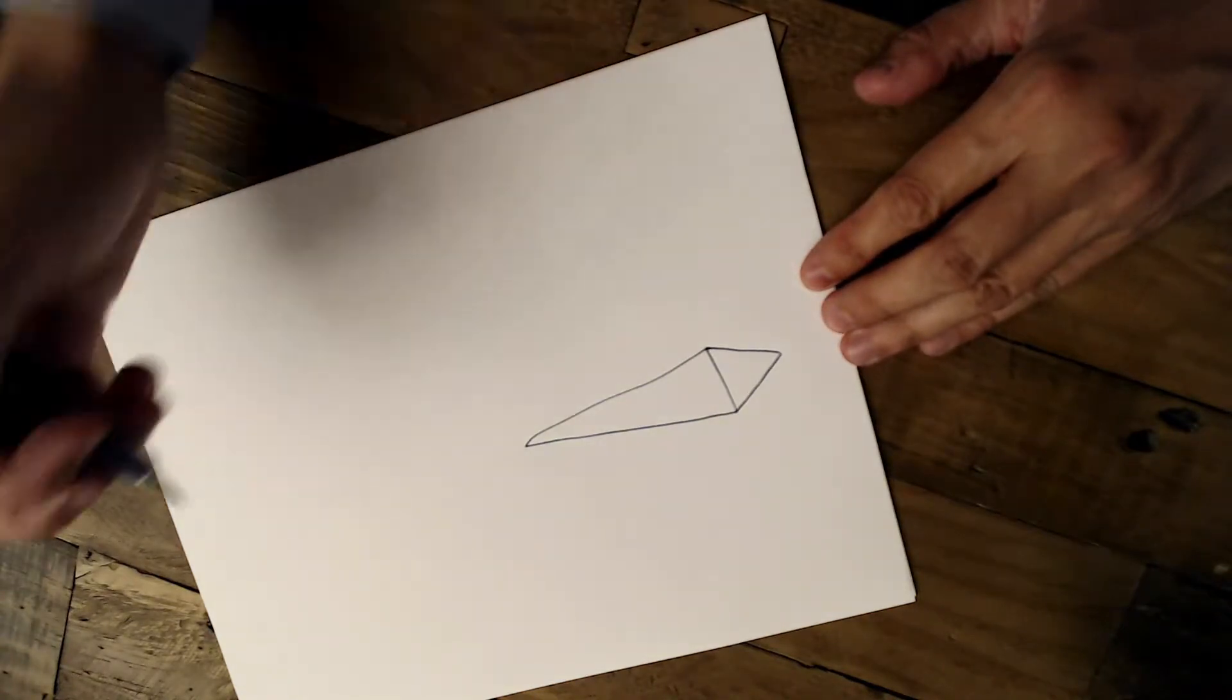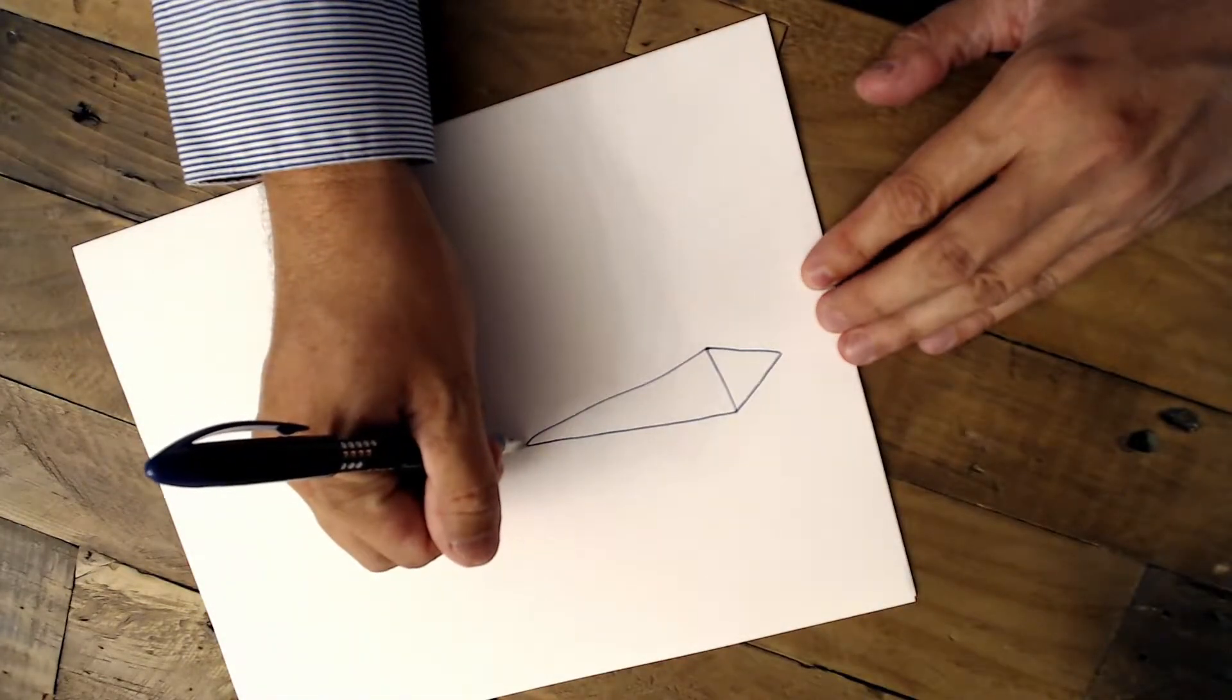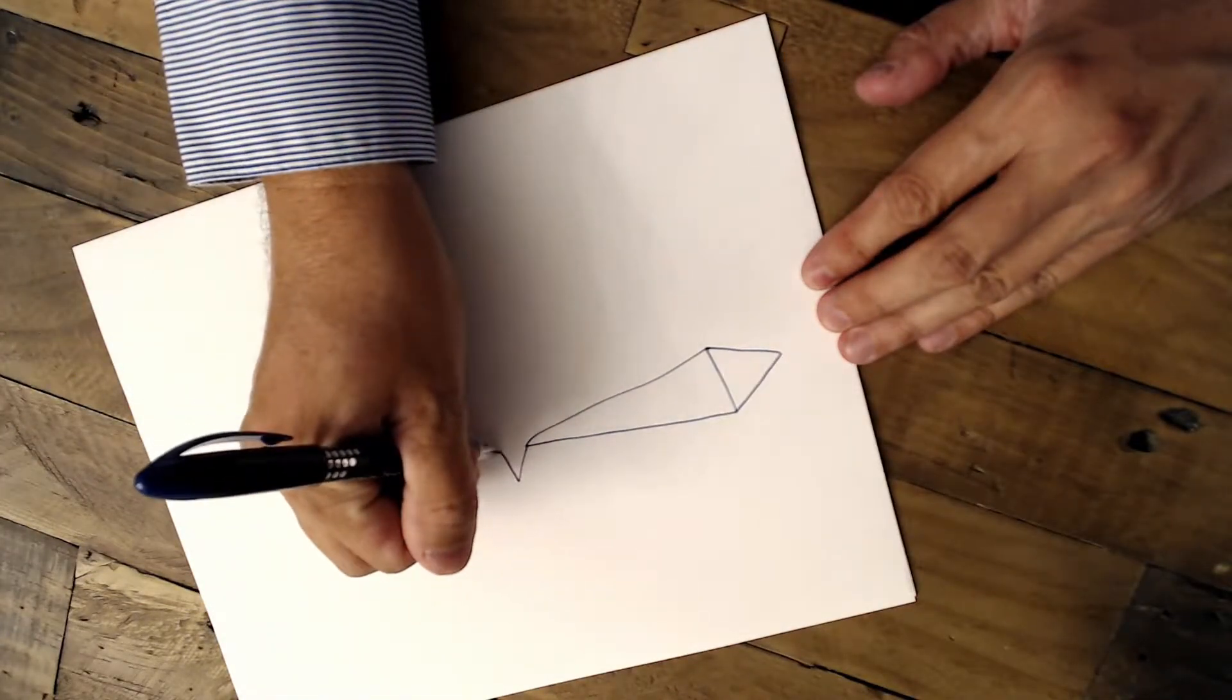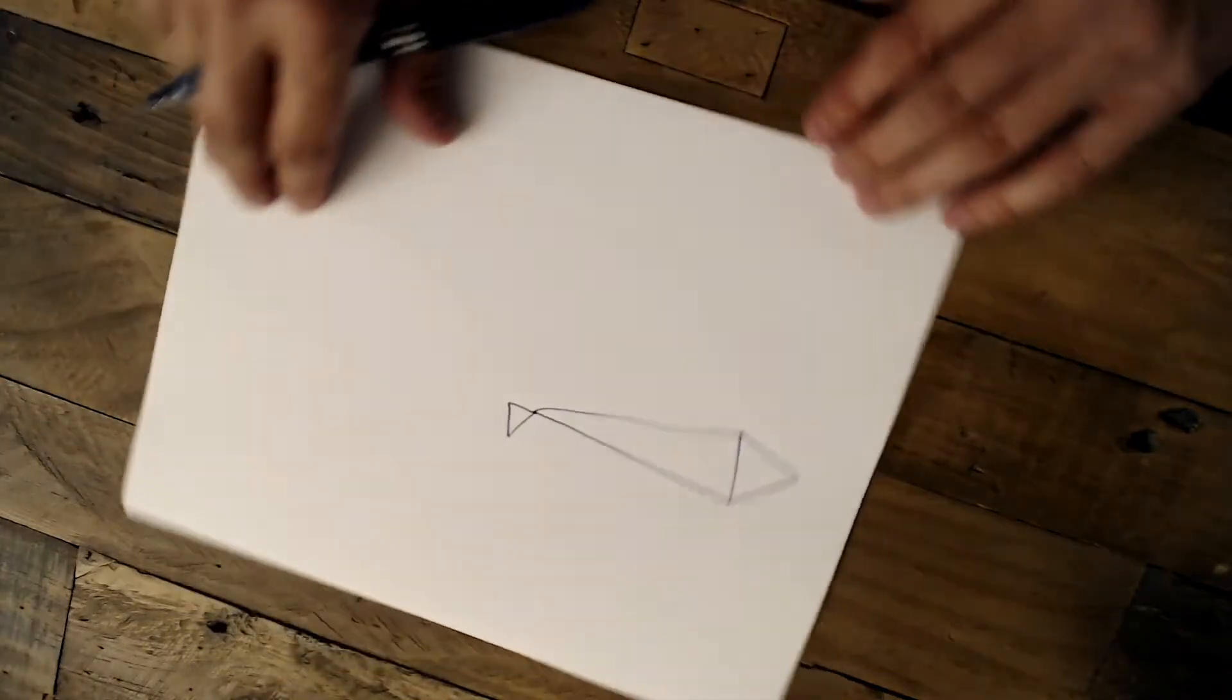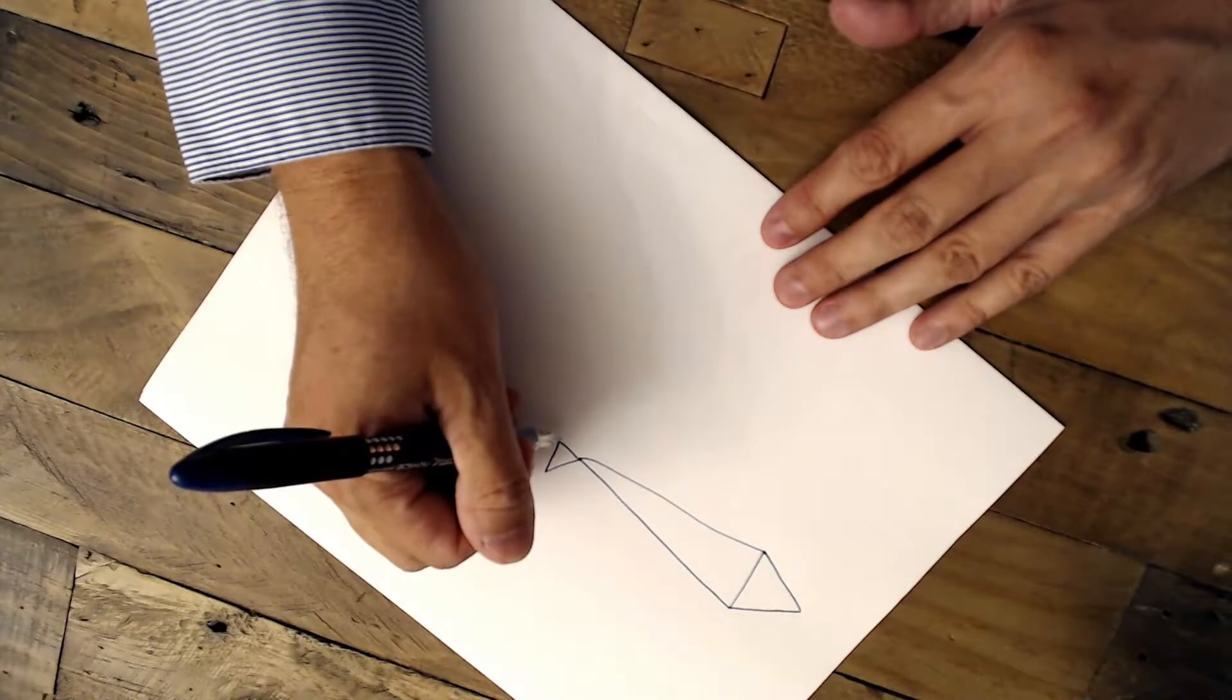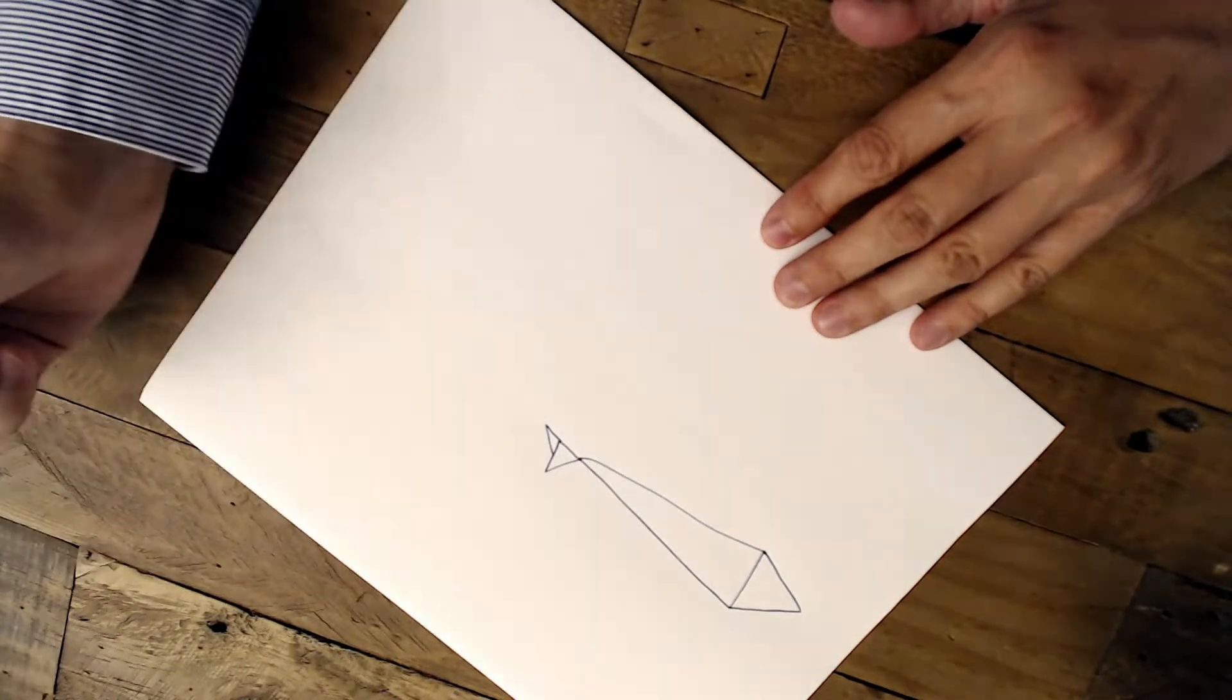We're going to make the tail with two triangles—one medium triangle. Starting here, go up, and then one short triangle. We're going to start that triangle right here like so.